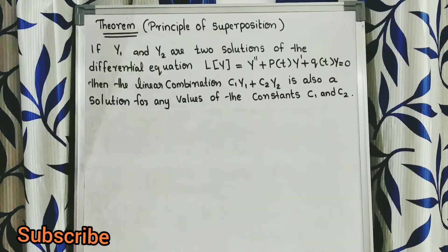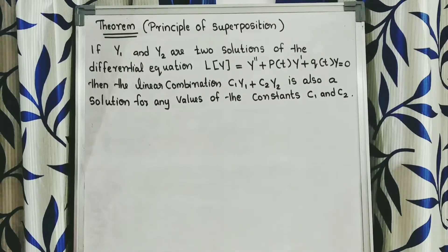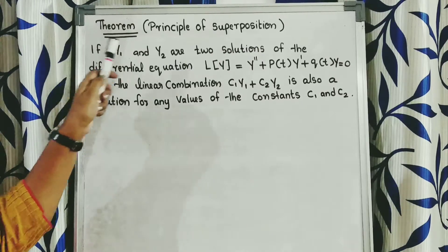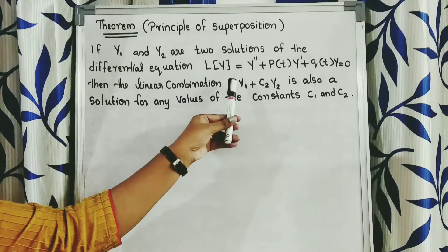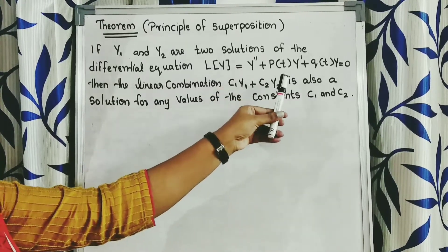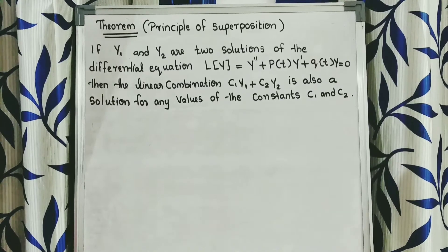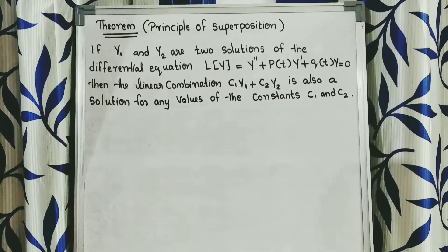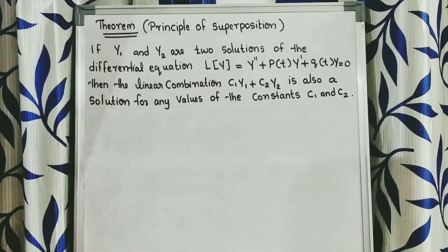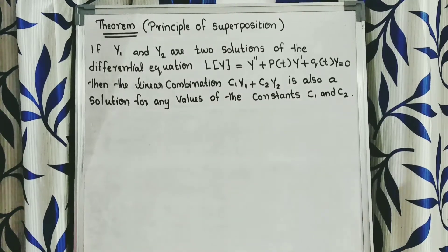Next, we are going to discuss the Principle of Superposition. The statement is: if y₁ and y₂ are two solutions of the differential equation y'' + p(t)y' + q(t)y = 0, then the linear combination c₁y₁ + c₂y₂ is also a solution of this differential equation for any constants c₁ and c₂.